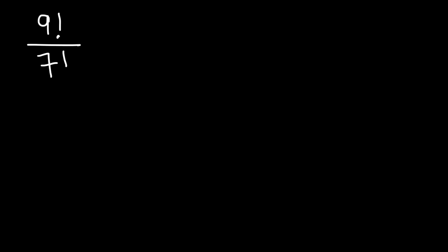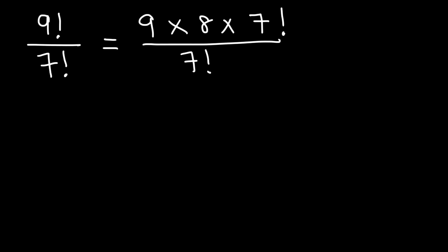Now sometimes you may need to divide by two numbers. Let's say if we want to divide 9 factorial by 7 factorial. 9 factorial is 9 times 8 times 7 times 6 times 5 times 4 all the way to 1. Well, instead of writing 7 all the way to 1, all of that is simply 7 factorial, and it's best to write it that way. Because notice that we can cancel 7 factorial. Therefore it's just 9 times 8, which is 72. So that's 9 factorial divided by 7 factorial.